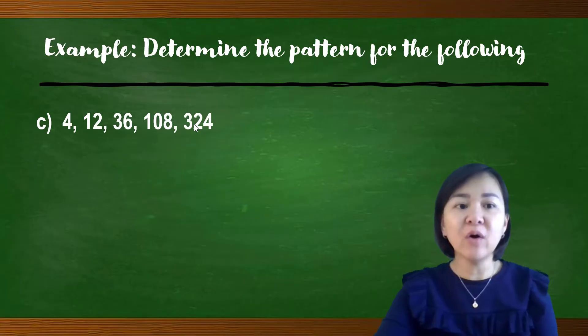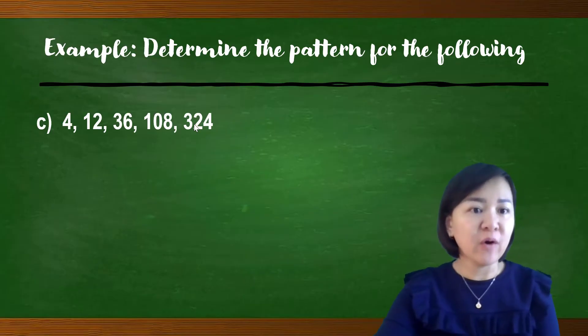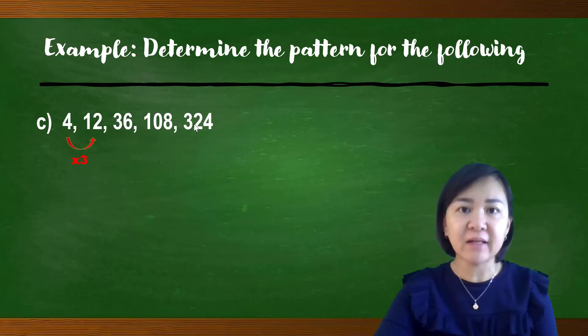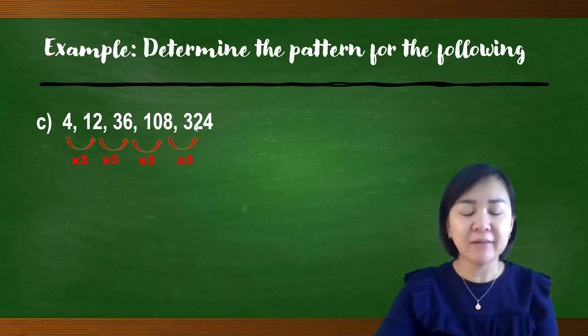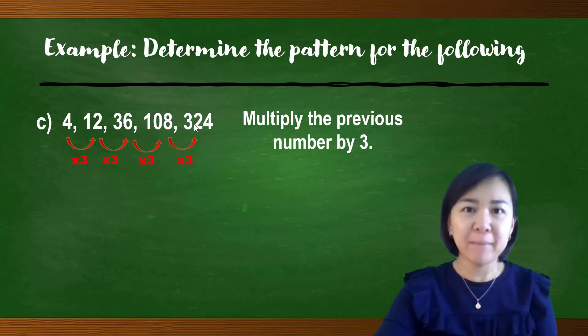Another question, C, 4, 12, 36, 108, and 324. What is the patterns? Observe the sequence, find out the patterns. Okay, so from 4 to get 12, how do we get 12? Yes, we can multiply by 3 to get 12. So, we tried out, 4 times 3, or 4 multiplied by 3, we get 12. Okay, we try on the next consecutive terms. Is it 12 times 3, we can get 36? Yes, we can get 36. 36 times 3, we get 108. Okay, 108 multiplied by 3, we can get 324. Therefore, we can write out the pattern, which is multiply the previous number by 3.